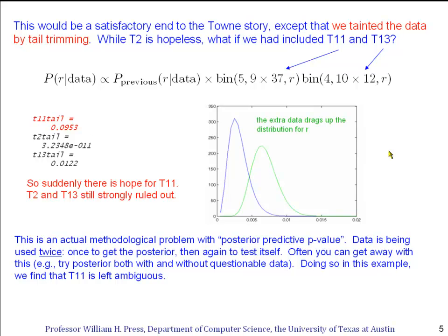This is an actual methodological problem with posterior predictive p-value. Data is being used twice. It's being used first to get a posterior, and then again to test itself. Often you can get away with this in just the kind of way we've illustrated here. If you have pieces of data that you're not sure whether to include them or not, try with the questionable data, try without the questionable data. And if you have conclusions that are robust, that are the same either way, then those are reasonable conclusions to draw. However, sometimes, as in this example, you'll find that posterior predictive p-value is not quite self-consistent. If you include the data, you get one result. If you don't include the data, you get the other result. And we've seen that in this example. T11 is left ambiguous when we're trying to figure out whether he's a descendant of William Towne.